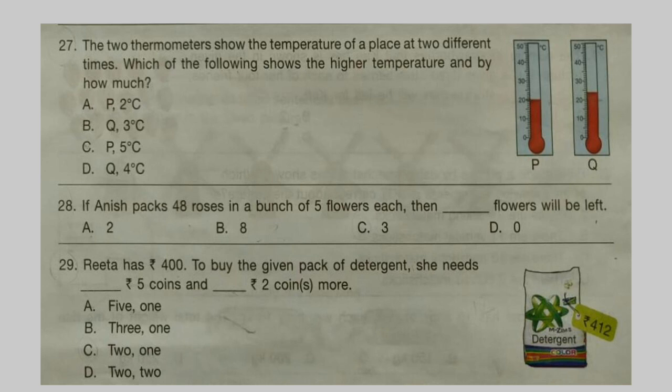Question 27: The two thermometers show the temperature of a place at two different times. Question 28: If Anish packs 48 roses in a bunch of 5 flowers each, then dash flowers will be left.